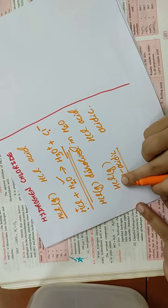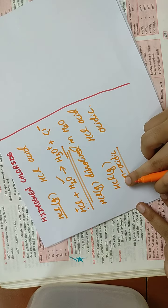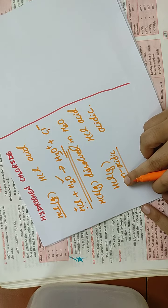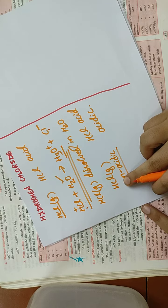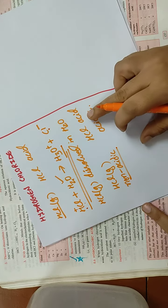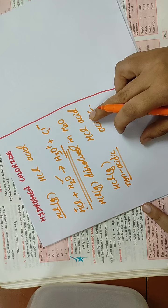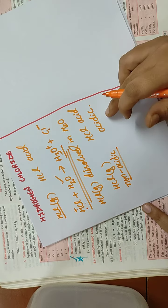HCl gas will not turn blue litmus red and will not conduct electricity. But on the other hand, HCl acid will turn blue litmus red and will conduct electricity.